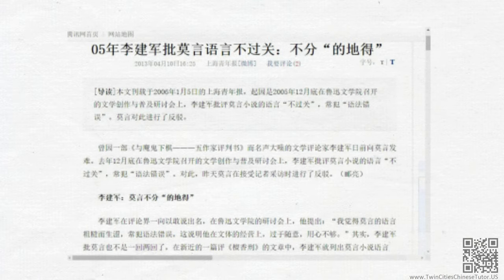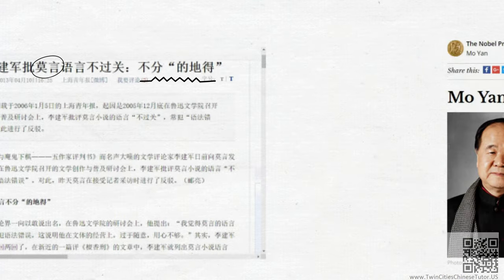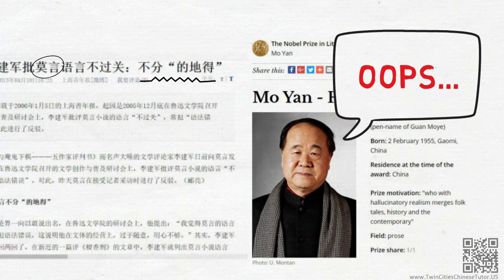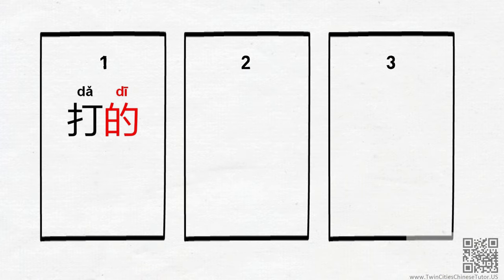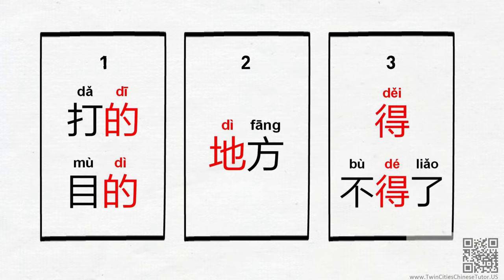They are everywhere and it's often confusing to figure out when to use each one. Even some Chinese people, including famous writers, mix them up. Besides being pronounced as DE, all of them also have other pronunciations and can serve a variety of functions in Chinese.